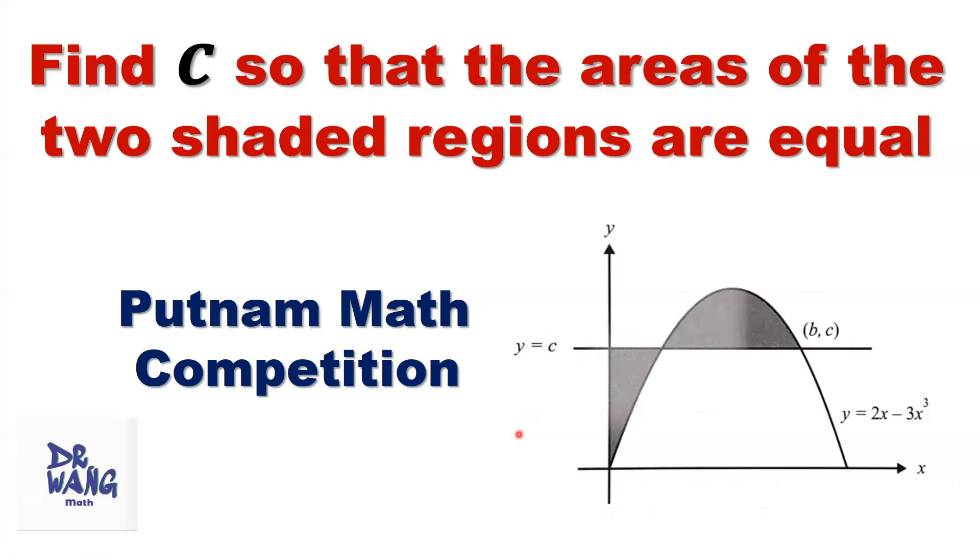We are going to use calculus method to find the area of this first region and find the area of this second region. Set them equal to solve the equation. Then we can find the c value.